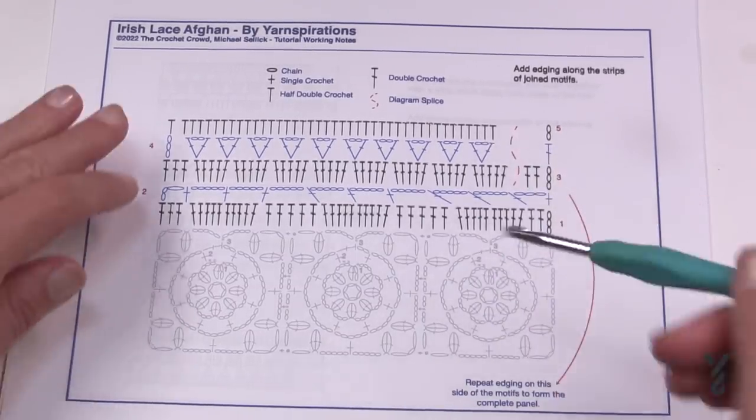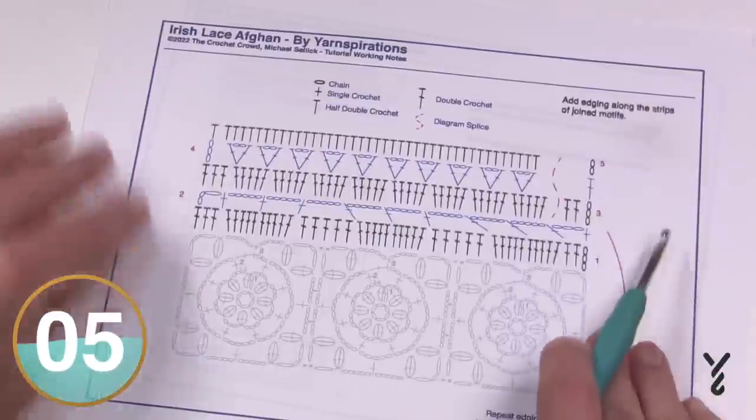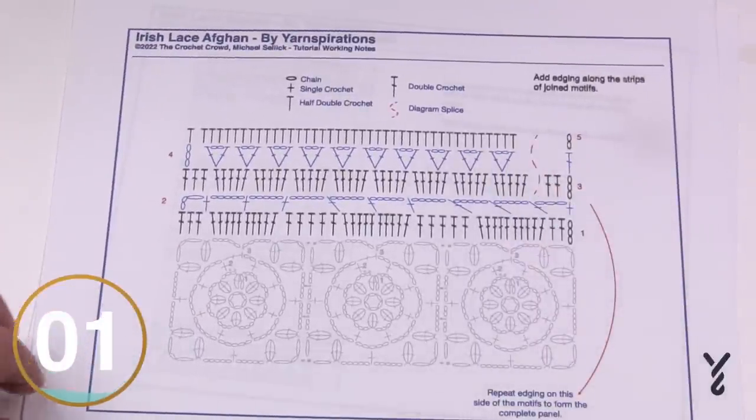So once you have that done you'll do the other side exactly the same way so you'll be building it out. Therefore you will be using this half double crochet to attach it to each other. So let me show you the final diagram here.